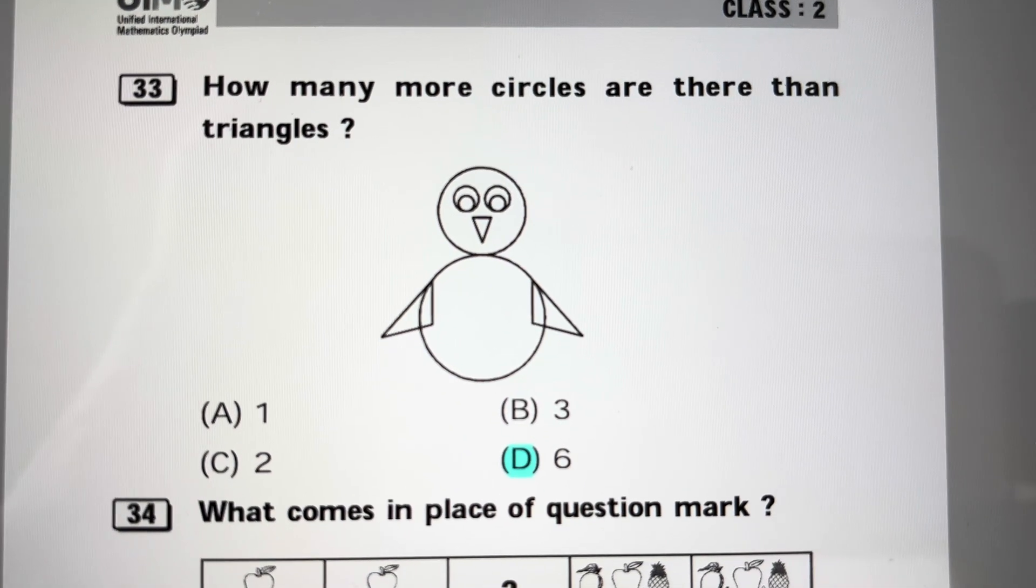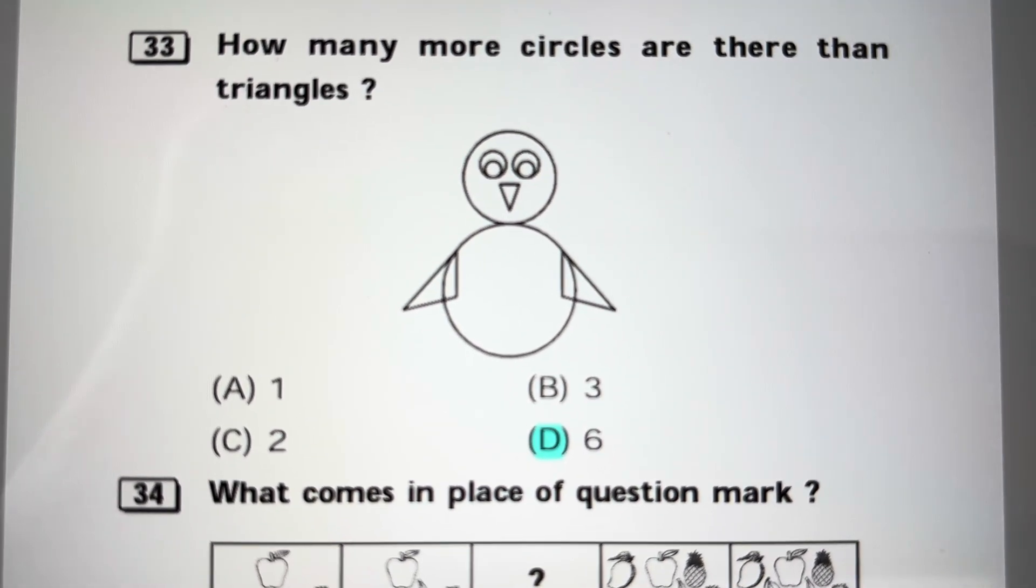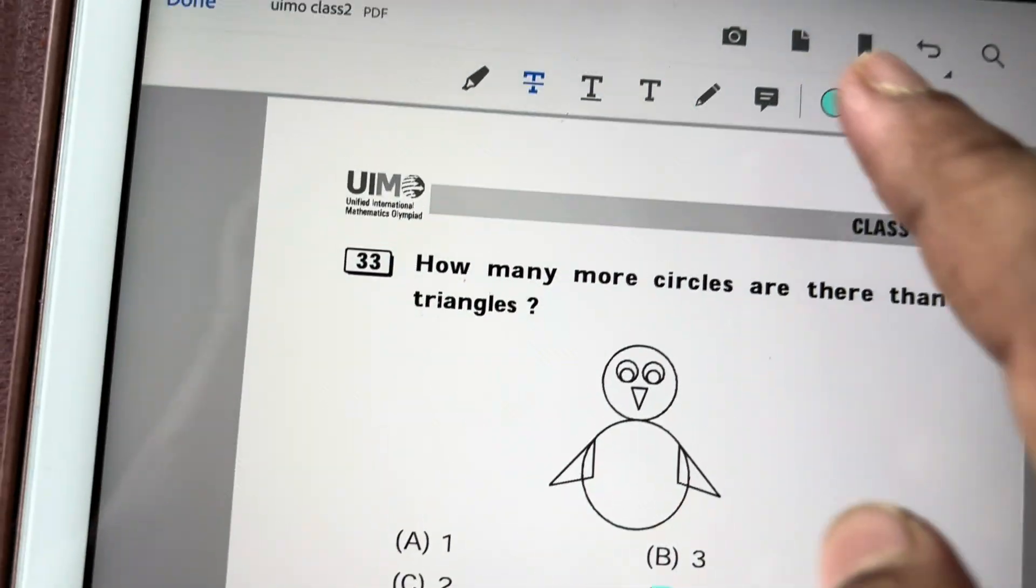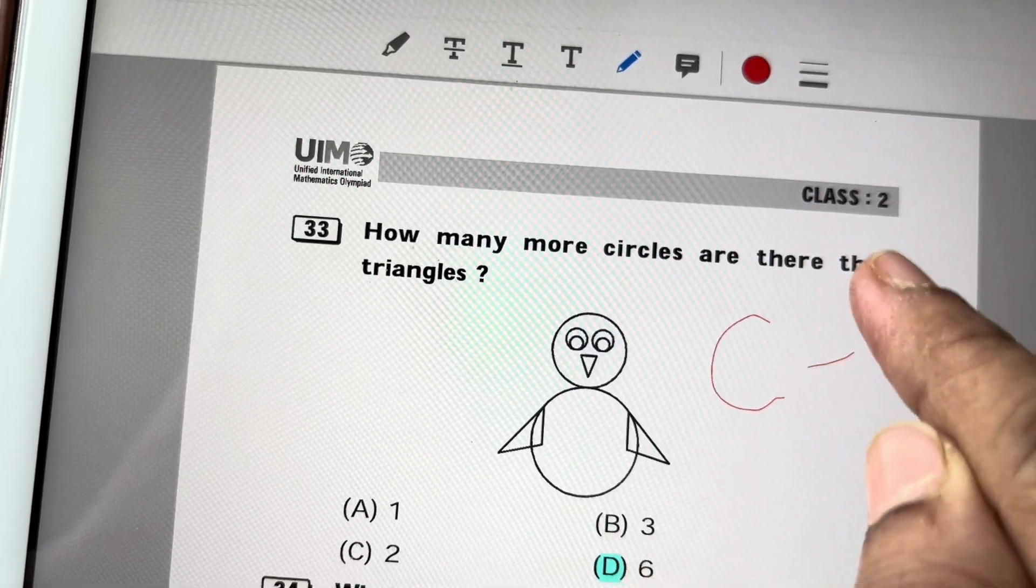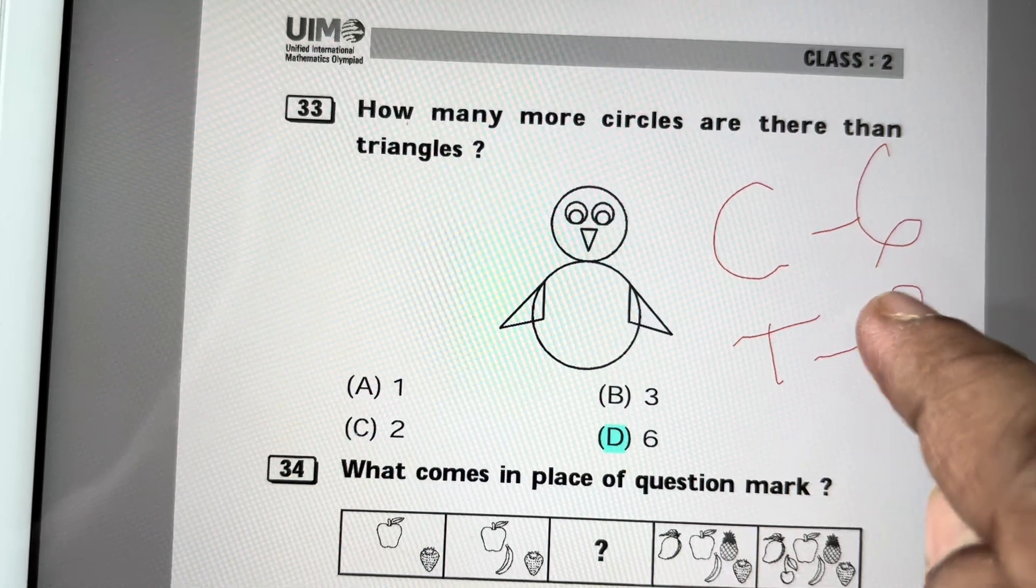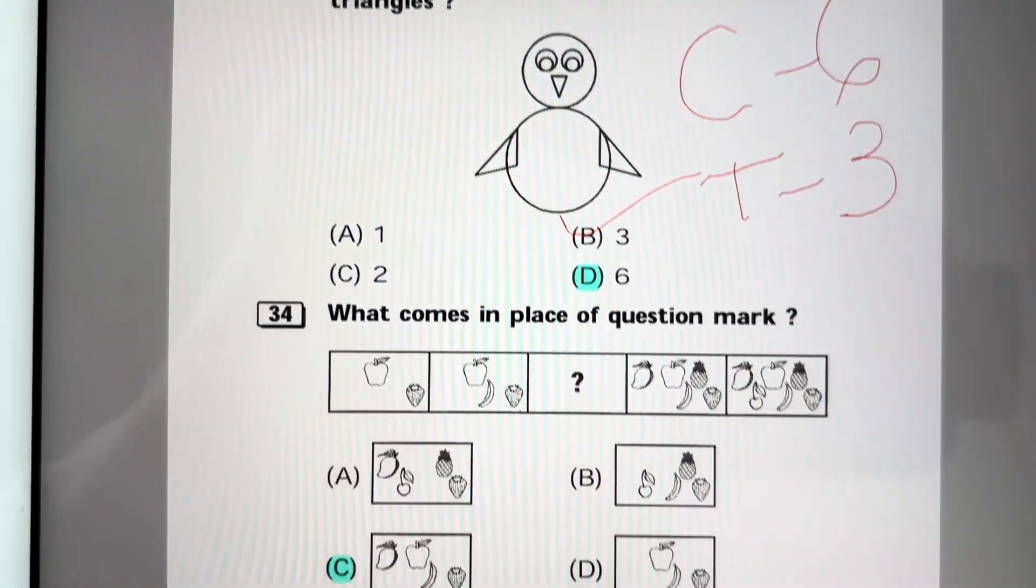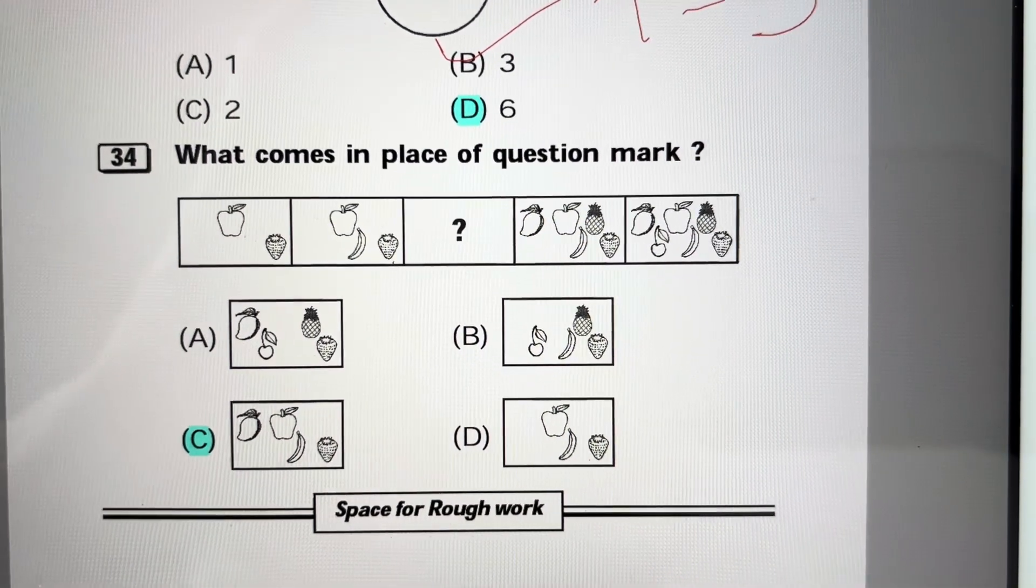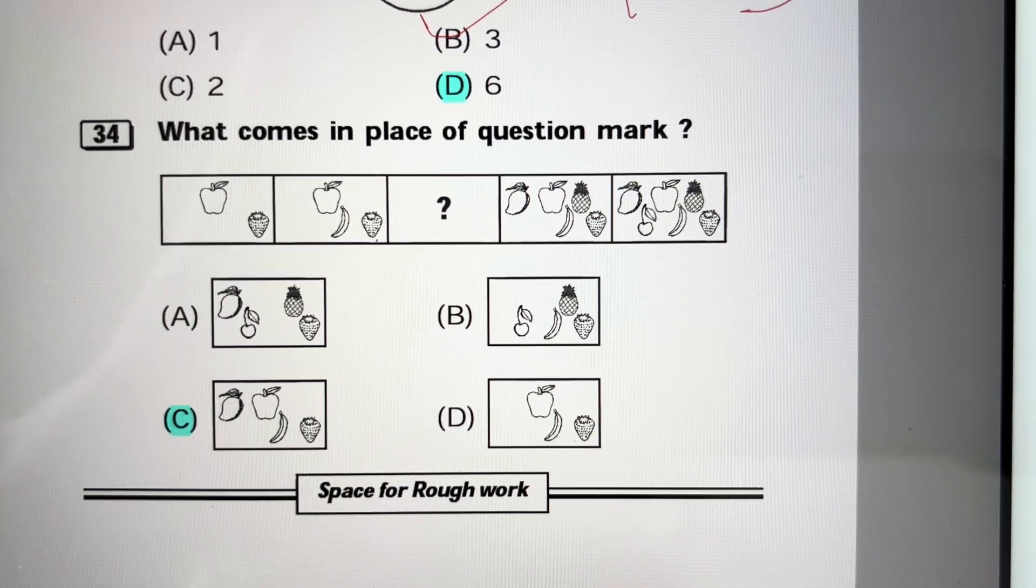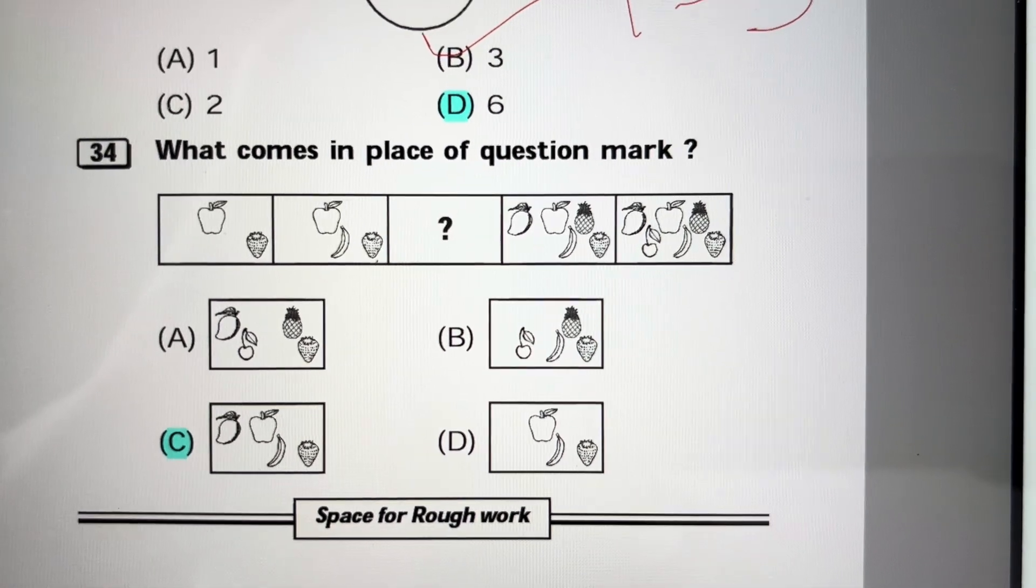How many more circles are there than triangles? There are 1, 2, 3, 4, 5, 6 circles and 1, 2, 3 triangles. So answer is 6 minus 3 equals 3. Answer is B, 3. Question 37: What comes in place of the question mark? First there are two fruits, then three fruits, then there will be four fruits and a mango will be added. Answer is C.